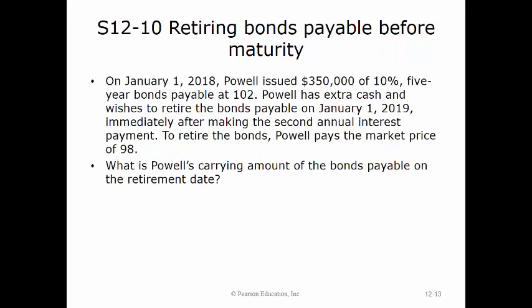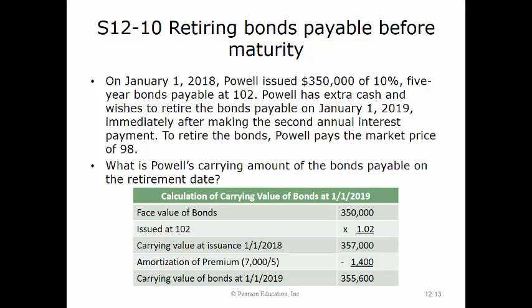On January 1st, 2018, Powell issued $350,000 of 10%, five-year bonds payable at $102,000. Powell wishes to retire the bonds on January 1st, 2019, immediately after the second annual interest payment, paying the market price of $98,000. The carrying amount at issuance equals $350,000 times 102%, giving us $357,000.